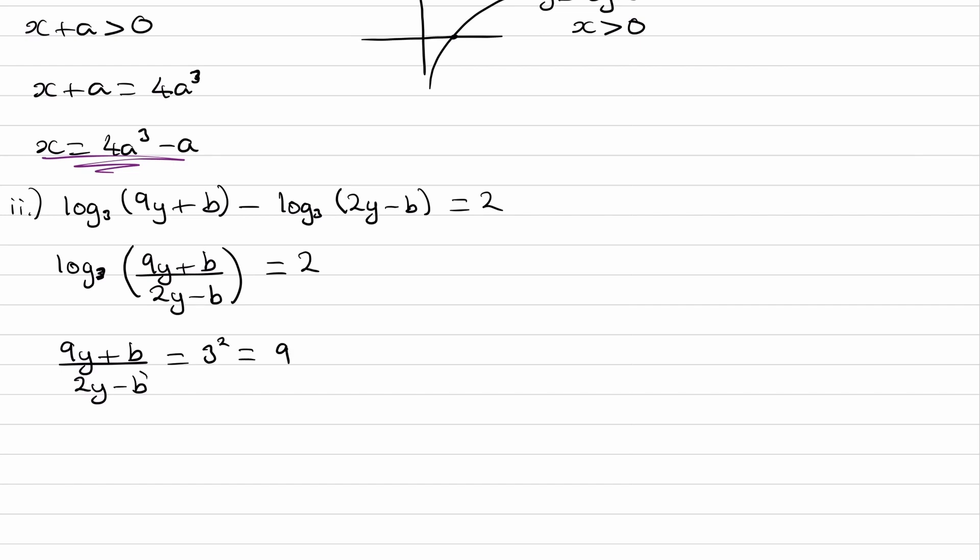So bring this to the right-hand side, so times it all by 9, and then we'll end up with 9y+b is equal to 18y-9b.